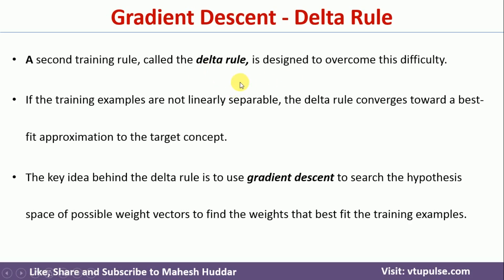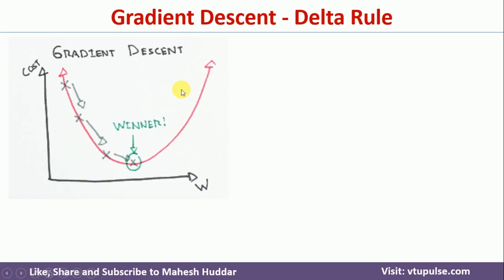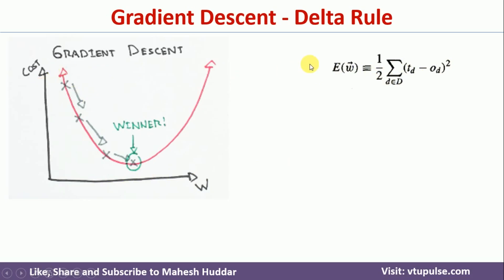With the help of the gradient descent algorithm, we can classify non-linearly separable data successfully. Gradient descent looks something like this — this axis is the weight and this axis is the cost, or error. What we need to do is initialize a set of weights, which should be small numbers. Once you initialize the weights, we use this equation to find the error term, which is half the squared difference between the target and calculated output over all training examples.